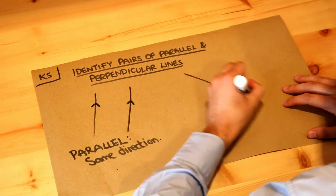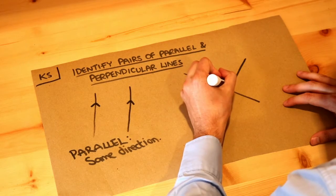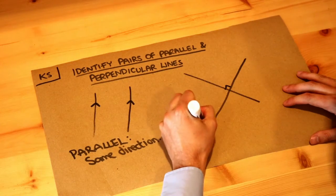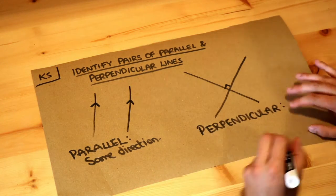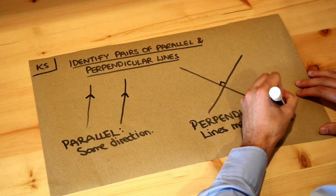Now, perpendicular lines are when the lines meet at right angles. So we're gonna have a right angle here, and these two lines here are perpendicular. Let's spell that, and that means the lines meet at right angles at 90 degrees.